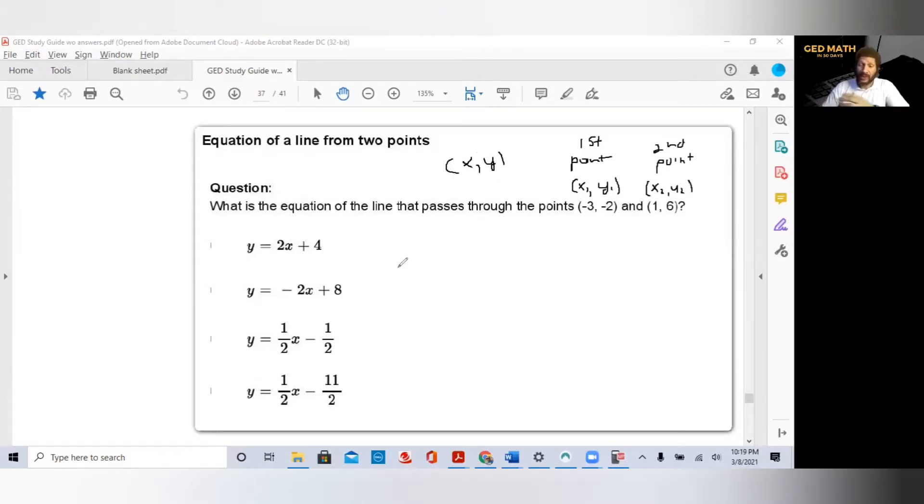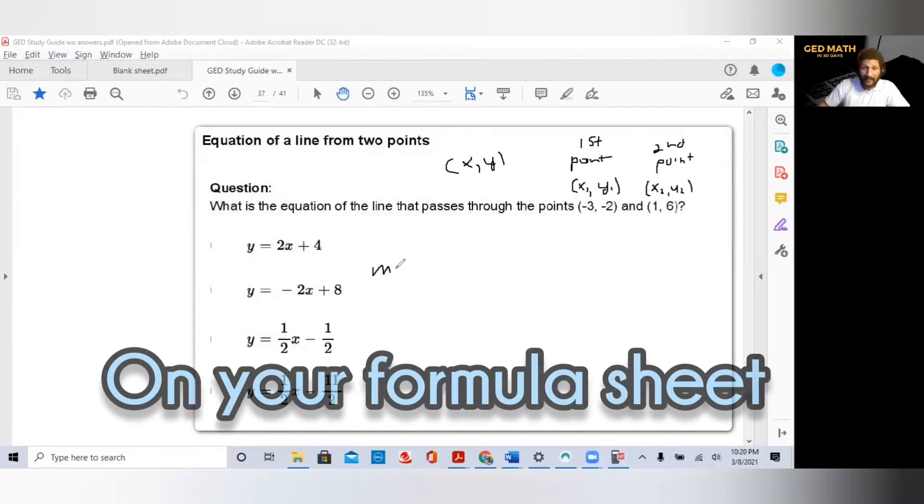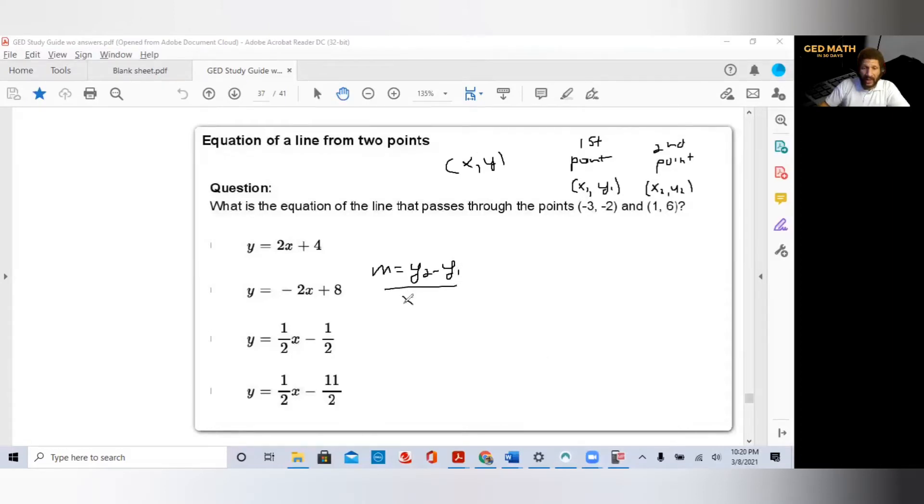If you go to your formula sheet, the formula is M equals Y2 minus Y1 over X2 minus X1. And all we're going to do is substitute. So our slope is Y2, which is 6, minus Y1 is minus 2. X2 is 1 minus. Remember, that minus in between those two values comes from the formula, not from the sign of the number. That's why I always enclose the Y or X coordinate in parentheses if it's negative. X1 is negative 3.